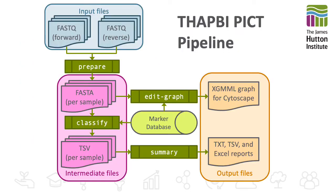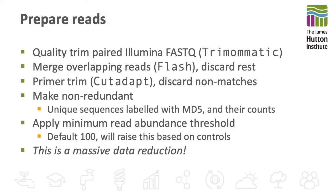This figure gives a graphical overview of the main pipeline. From large FASTQ input files, we go to very much reduced intermediate files. From these, we can generate an edit graph and some reports. We take the paired FASTQ files, trim them, merge them, and apply the primer trimming and discard any non-matches along the way. We then make this file non-redundant and apply a minimum abundance threshold.